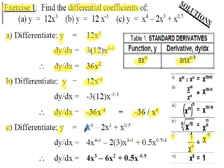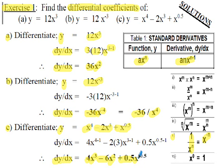Part c: y = x⁴ − 2x³ + x^0.5. Three terms separated by plus/minus, so we differentiate each as ax^n individually. First term: a=1, n=4, giving 4x³. Second term: a=−2, n=3, giving −6x². Third term: a=1, n=0.5, giving 1×0.5=0.5 and index 0.5−1=−0.5, so +0.5x^(−0.5).